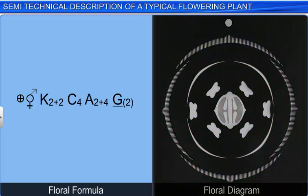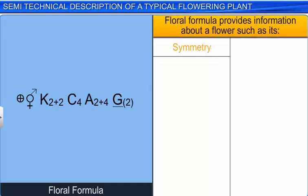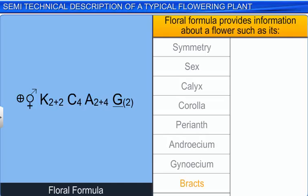The floral formula provides information about a flower, such as its symmetry, sex, calyx, corolla, perianth, androecium, gynoecium, bracts, bracteoles, bractioles, staminodes, and pistilodes.